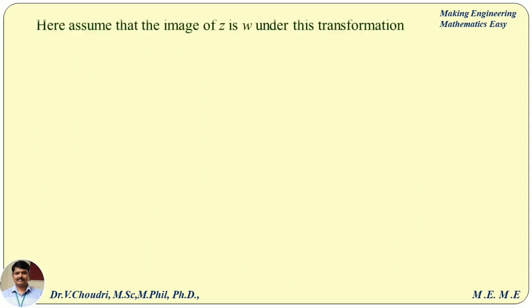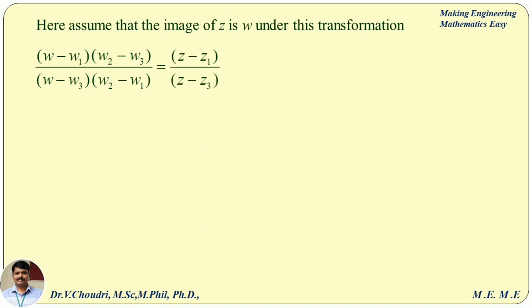We are going to use the cross-ratio property of bilinear transformation: the cross ratio of four points is invariant under a bilinear transformation. Therefore the fourth point in the z plane is z and the fourth point in the w plane is w. The formula is: (w minus w1)/(w minus w3) times (w2 minus w3)/(w2 minus w1) equals (z minus z1)/(z minus z3) times (z2 minus z3)/(z2 minus z1).